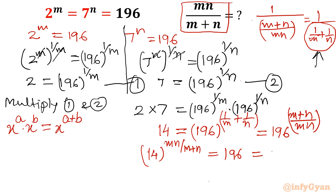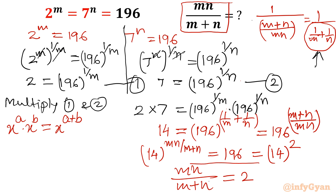Now 196 can be written as 14 squared. Comparing both sides, mn over m plus n equals 2. From both methods we calculated that the value of the expression mn over m plus n equals 2. I hope you like this video. Thank you so much for watching — we will meet tomorrow. Don't forget to subscribe and give a like. Bye bye.